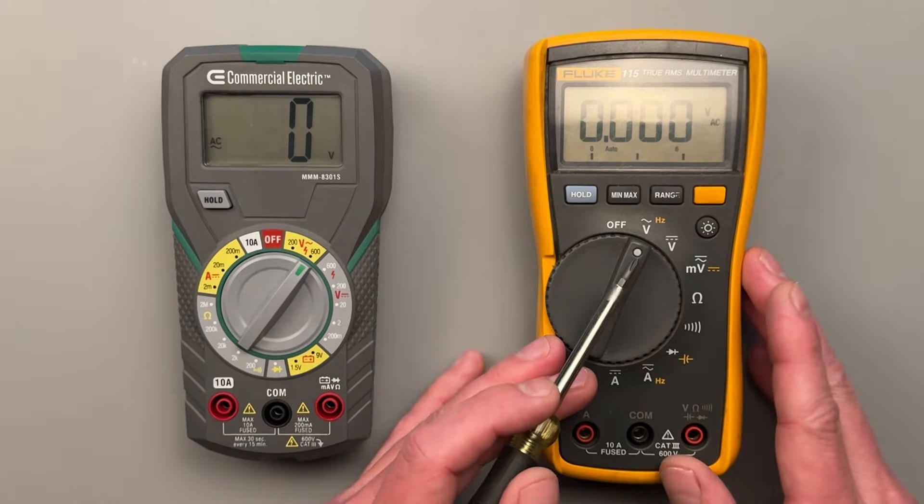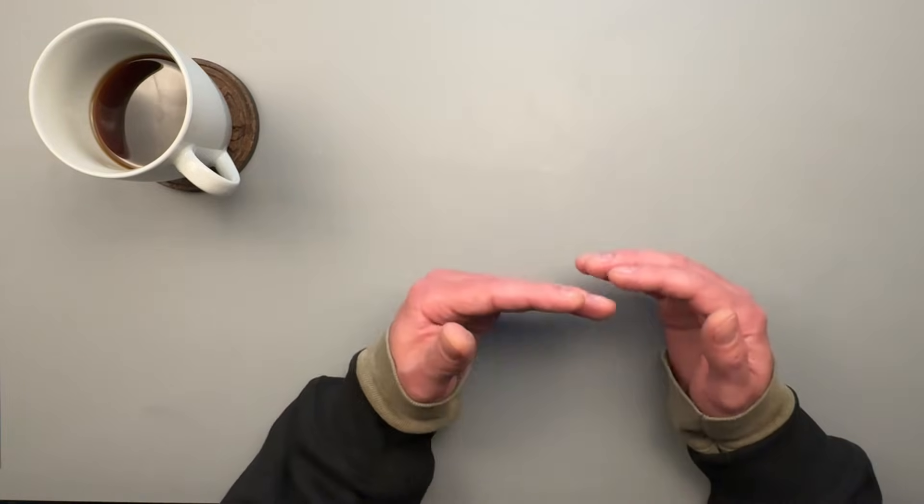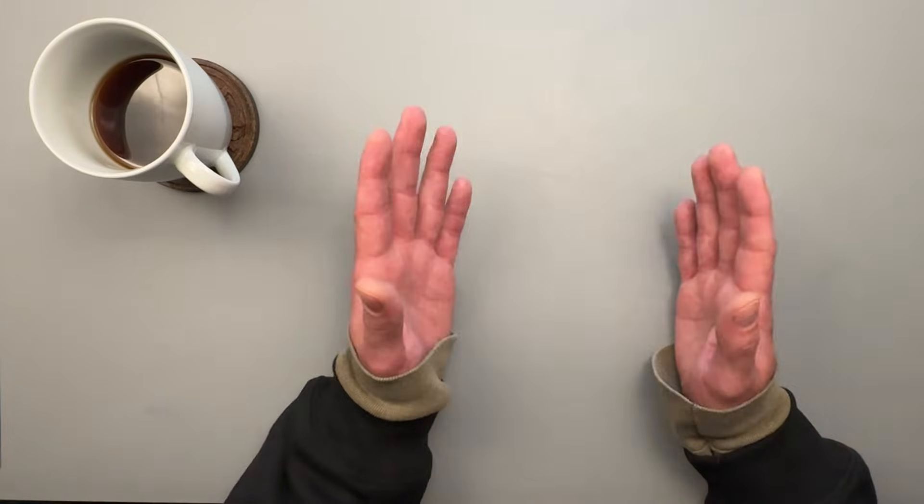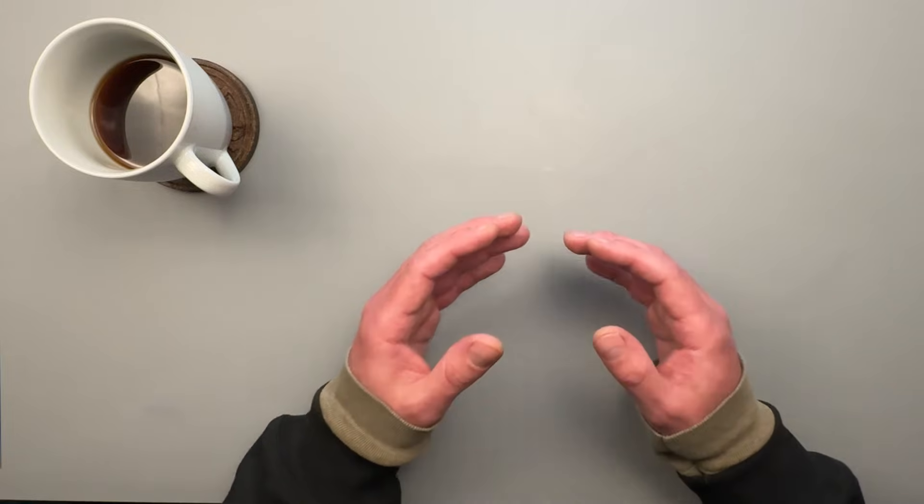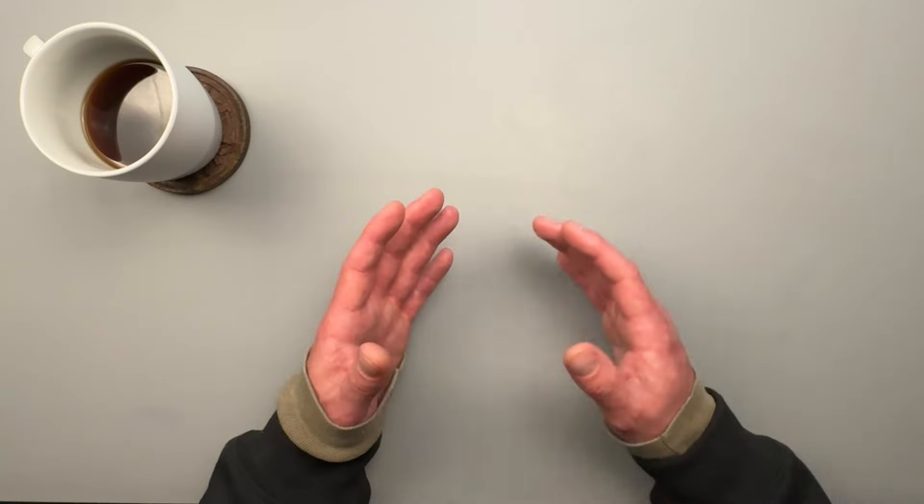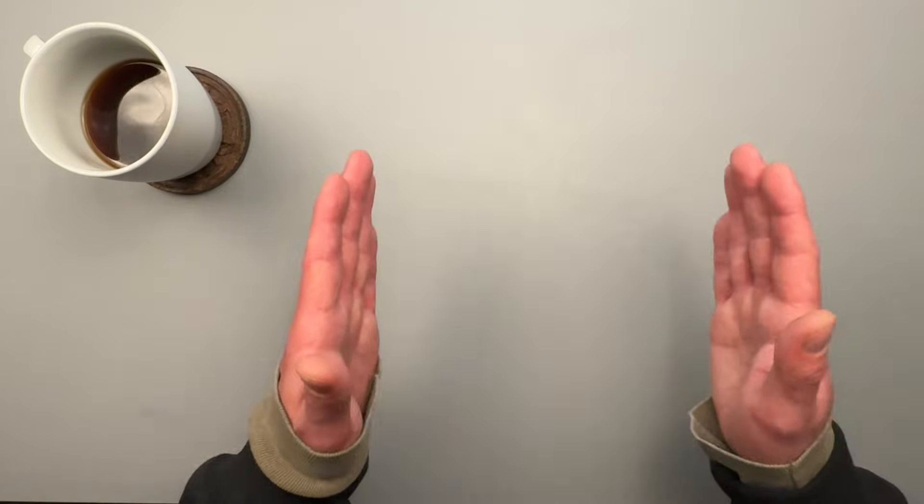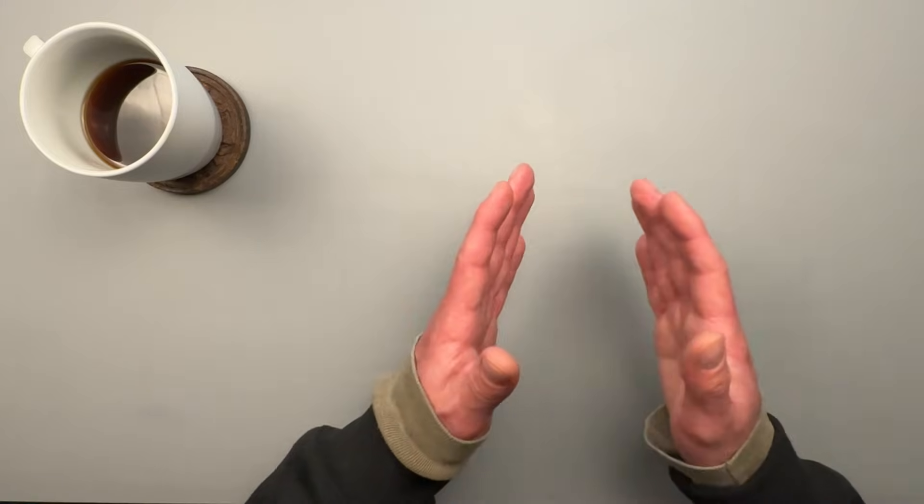An auto-ranging meter like we see on the right is able to detect and adjust its readings automatically without you having to change any settings. This range selection will also apply to our voltage DC, resistance, and current measurements. On a manually selecting meter, you must already have an idea of the range of voltage, current, and resistance when making a measurement.